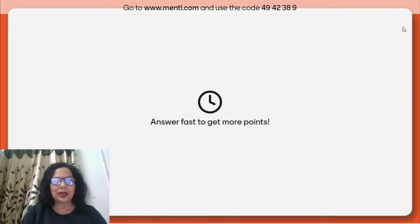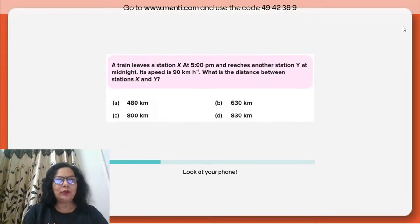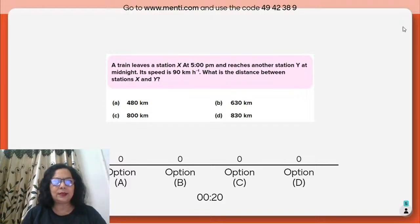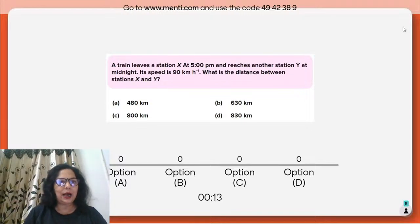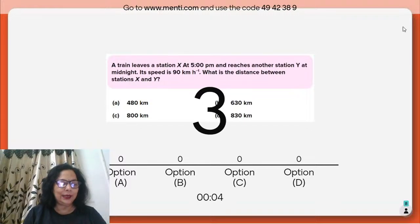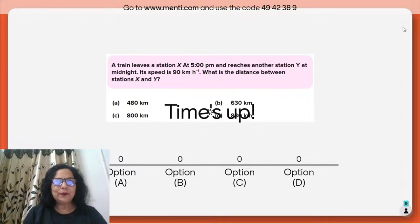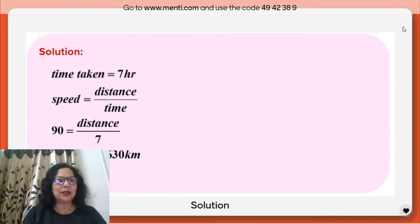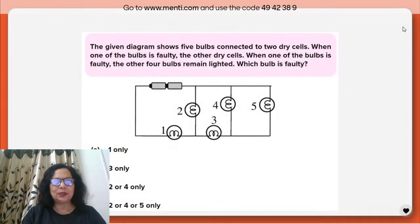Very good. So, the train leaves station at 5 PM and reaches Y at midnight. Speed is 90 km/h. How many hours did it take? From 5 to 12 — seven hours. Distance equals speed into time: 90 × 7 = 630 kilometers. Option B is the correct answer — 630 kilometers.